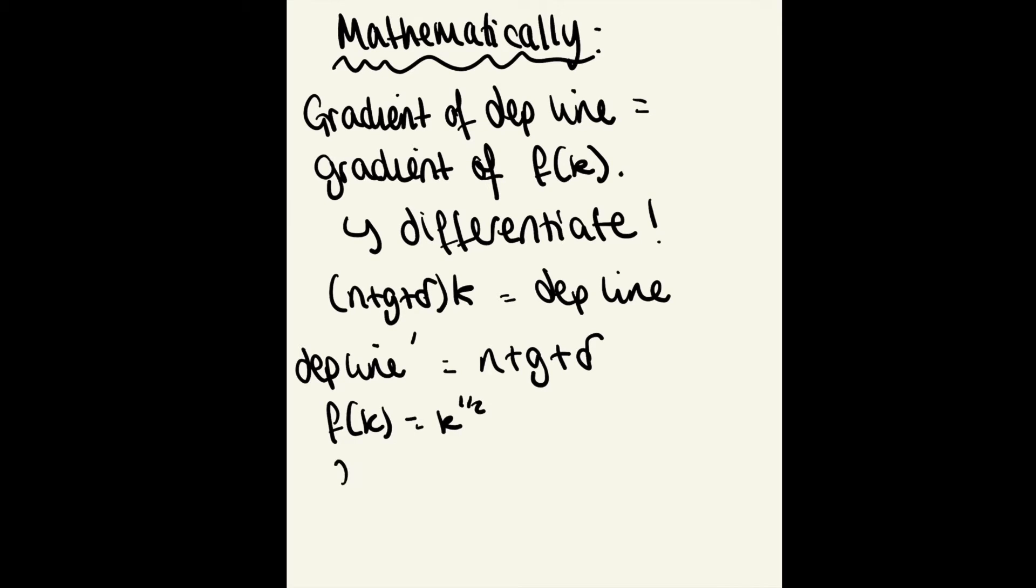Differentiate that—bring your power down so you have a half k to the negative a half. Set them equal: n plus g plus delta equals a half k to the negative a half, and rearrange for k.